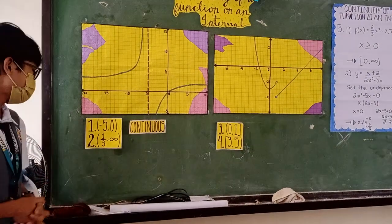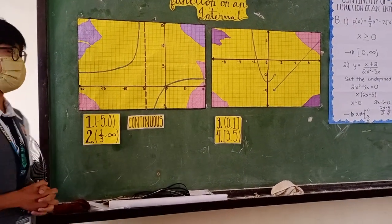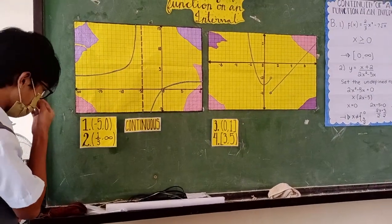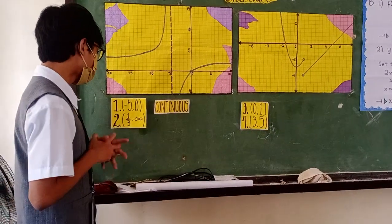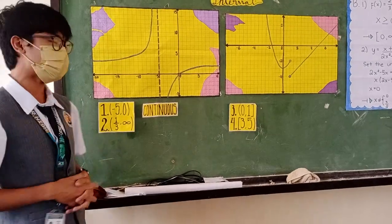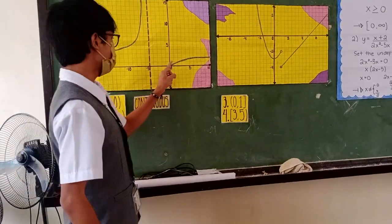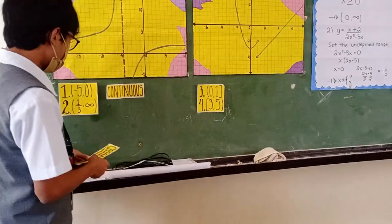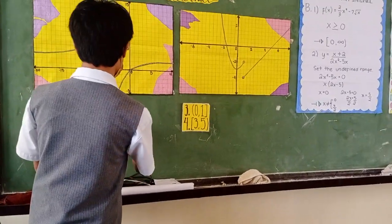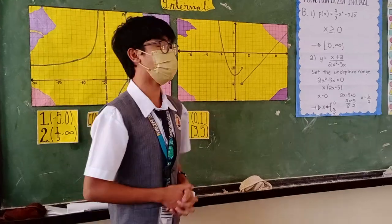For item number two, the given interval is one-third and infinity. The notation symbol is parentheses, so one-third or approximately 0.33 in decimals and infinity should not be included while tracing the line, from this point to this point. Therefore, this graph is also continuous. For item number three and four,